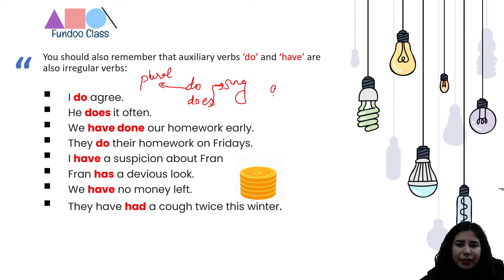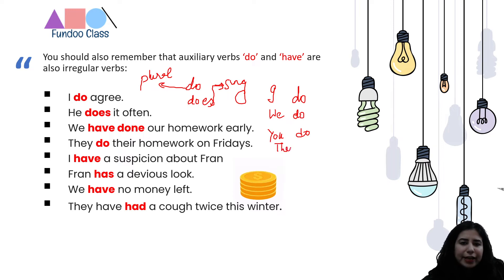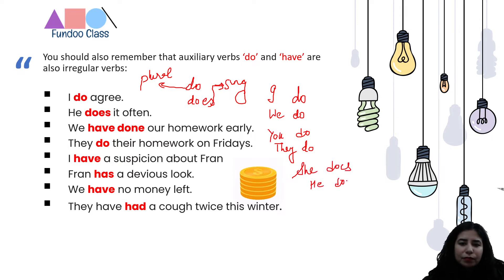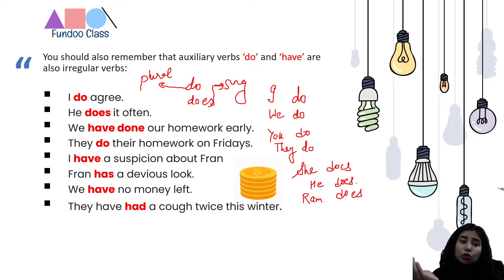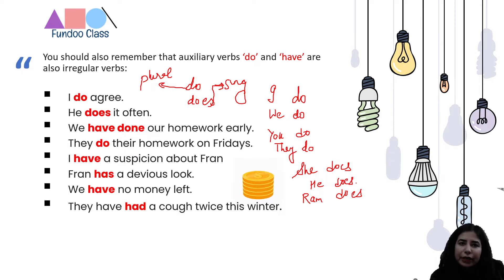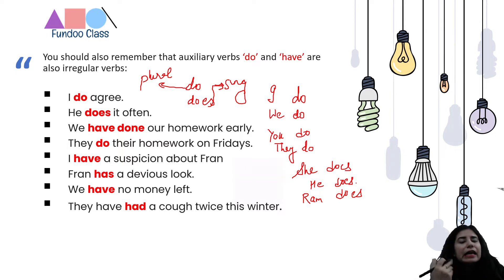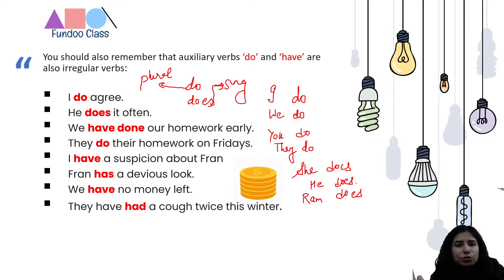So 'do' is plural and 'does' is singular. Looking at the sentences on screen: 'I do agree' and 'He does it often.' I and you and they take 'do', while he, she, and singular nouns take 'does'. We do agree, they do agree, you do agree. He does it often, she does it often, Ram does it often. This is how we use 'does' with singular nouns.